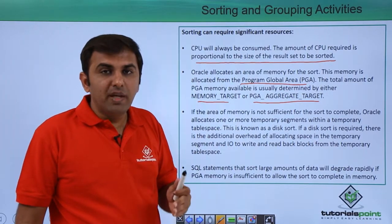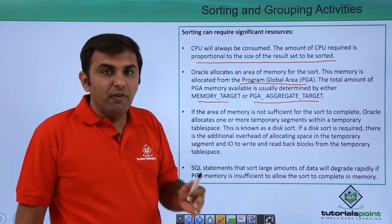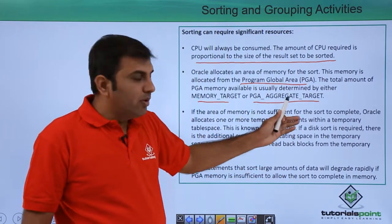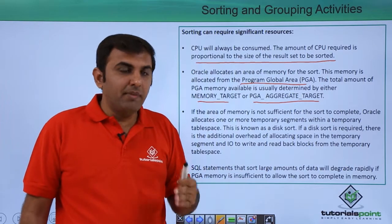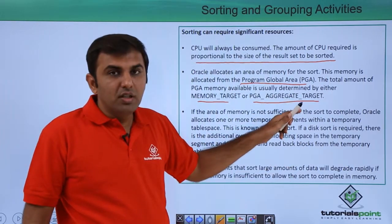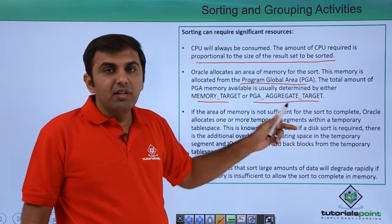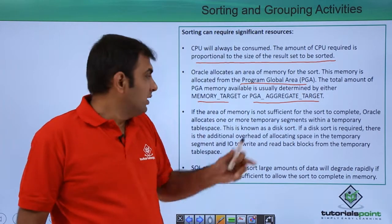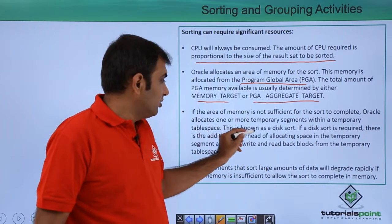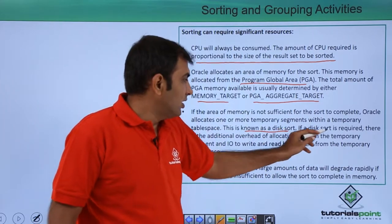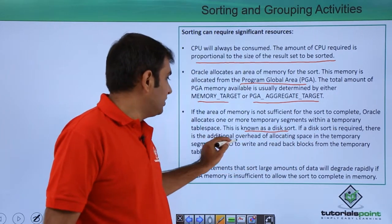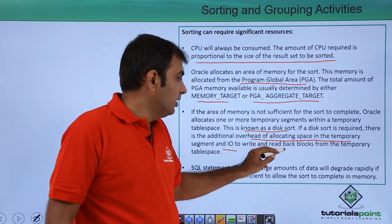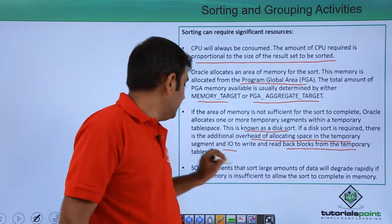If not enough memory space is available, Oracle will use the temporary segment to perform the activity — that is, from the temporary tablespace. Like when you are doing the sorting activity and PGA is not enough, Oracle will use the temporary segment from the temporary tablespace. This is also known as a disk sort. The disk sort requires additional overhead of allocating space in the temporary segment and writing and reading back blocks from the temporary tablespace.